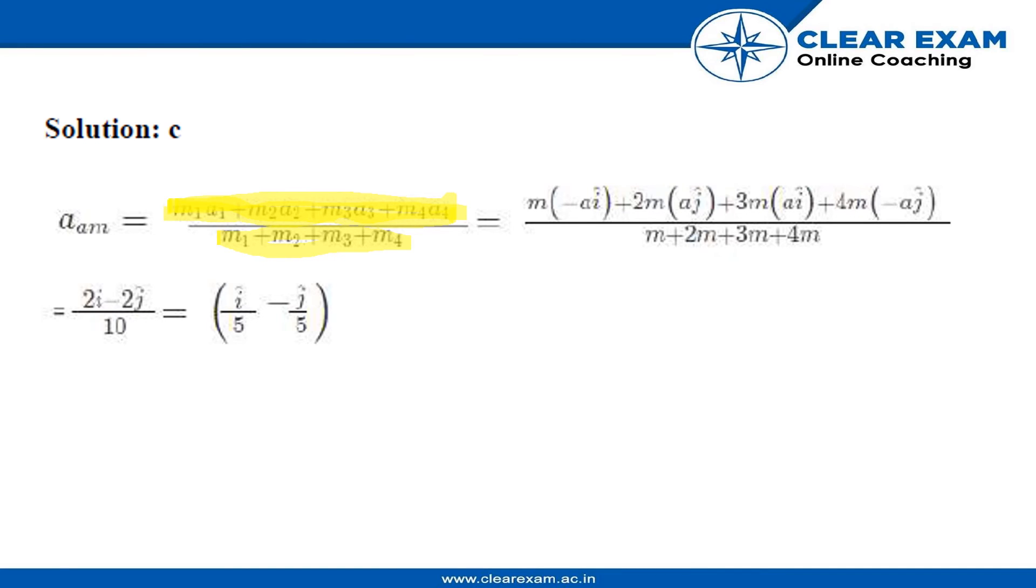Now putting the values: m1 is m and a1 is a, and minus is used here because in the question direction of acceleration is in minus i cap. Then mass of particle 2 is 2m and acceleration is a in positive j cap.